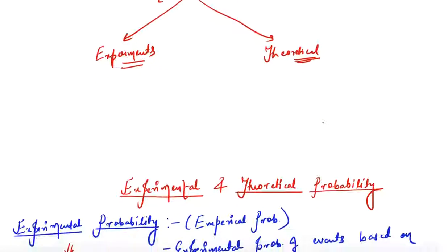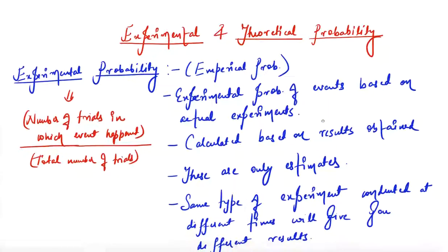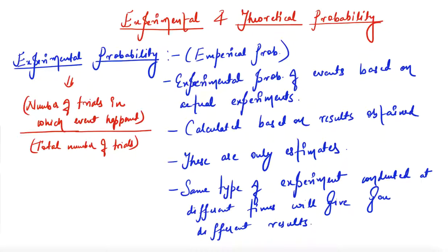Without wasting any time, let us start. I have already written a few key points related to this. Experimental probability — let me explain this first. It is based on outcomes of experiments. Experimental probability is also known as empirical probability. The experimental probability of an event is based on actual experiments.